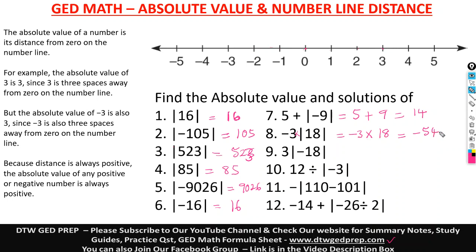Here it says three times the absolute value of negative 18. Since this three is positive, and the absolute value of negative 18 is a positive 18, we have three times 18, which gives us a positive 54.